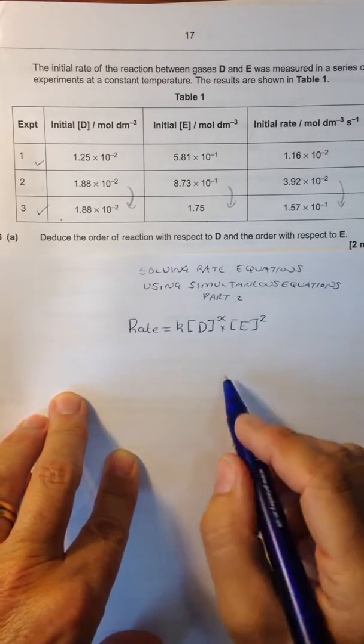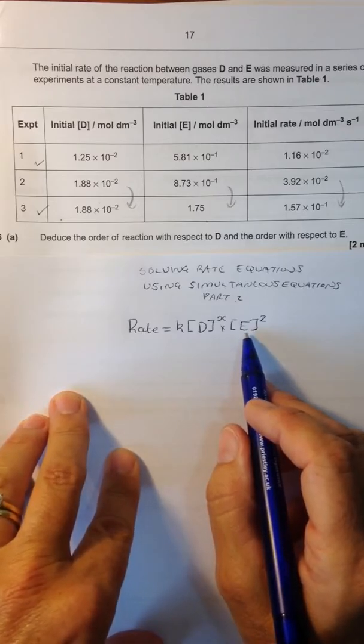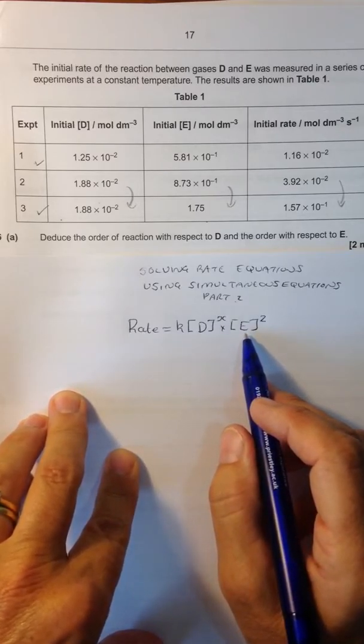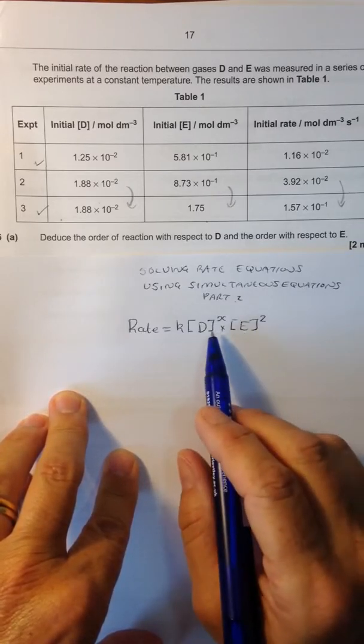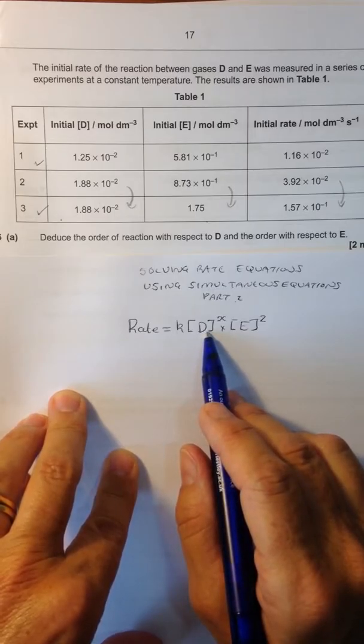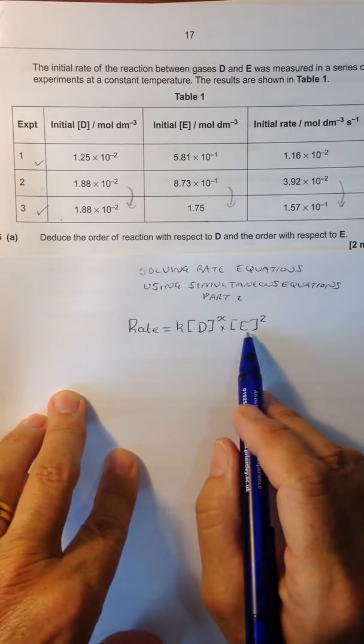We've just discovered that it's second order with respect to the concentration of E. But how are we going to find the order with respect to the concentration of D when there are no two experiments where the concentration of E has been kept constant?